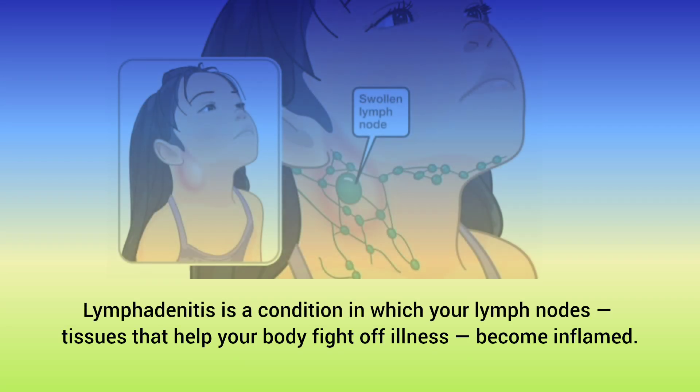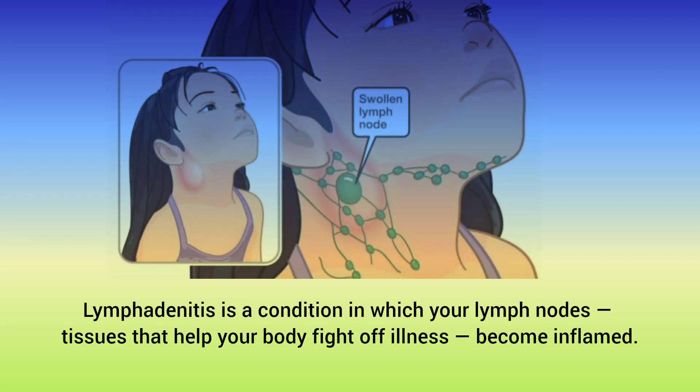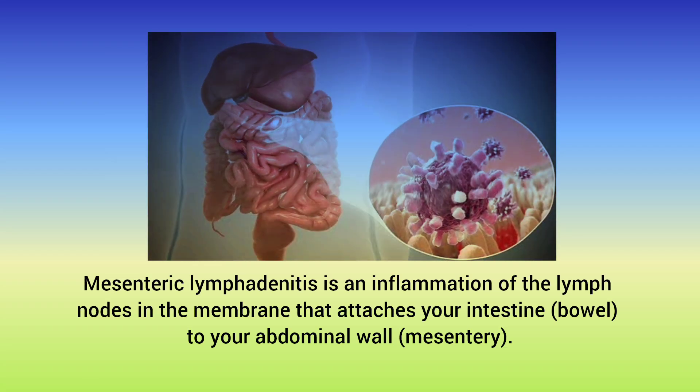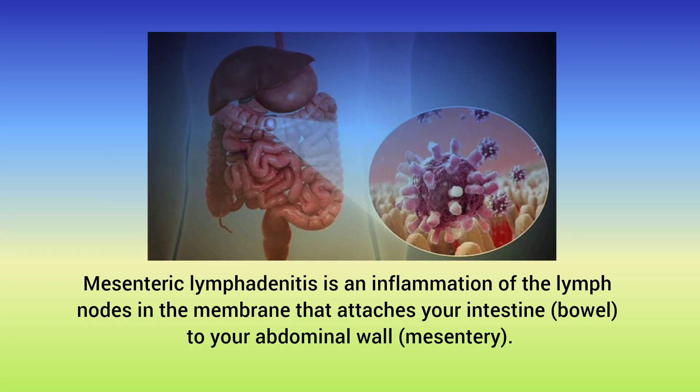Lymphadenitis is a condition in which your lymph nodes, tissues that help your body fight off illness, become inflamed. Mesenteric lymphadenitis is an inflammation of the lymph nodes in the membrane that attaches your intestine, bowel, to your abdominal wall mesentery.